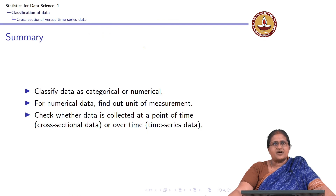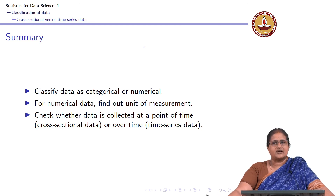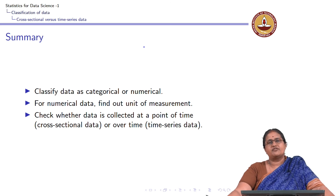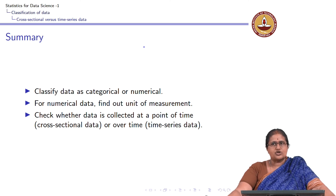To broadly classify: given data, we classify them as categorical or numerical. Whenever we are presented with a data set, we should be able to classify all variables as a categorical variable or a numerical variable. If it is a numerical variable, find out the unit of measurement and check if the unit of measurement is consistent across all observations. Also check whether it is cross-sectional data or time series data.